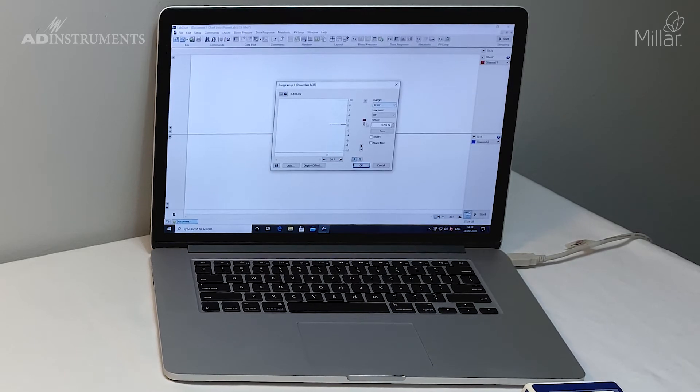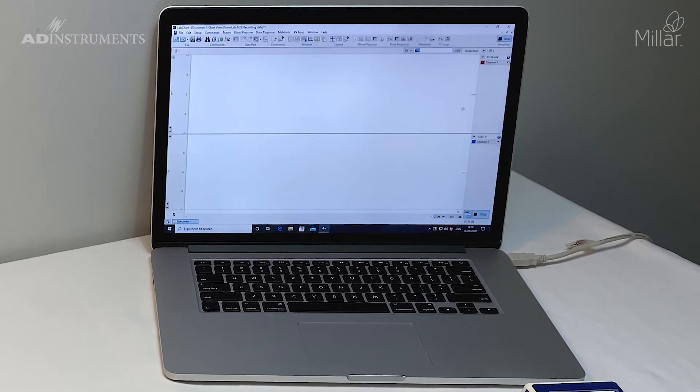My range is set to 10 millivolts. I'll click zero to zero the transducer. Now it's sitting at zero millivolts. I can click OK and start recording because this is my zero level.